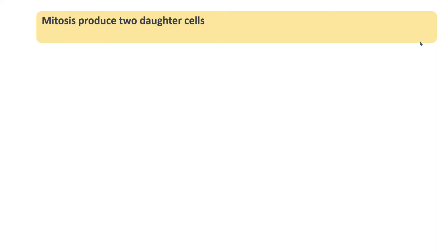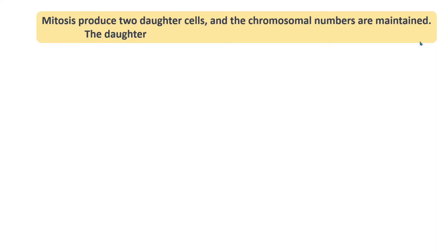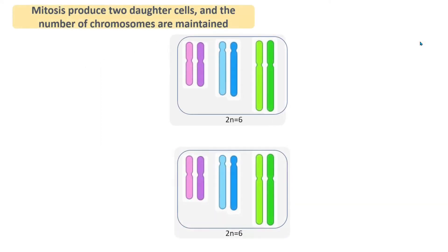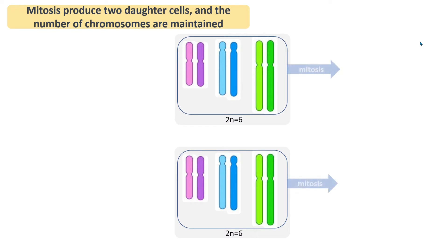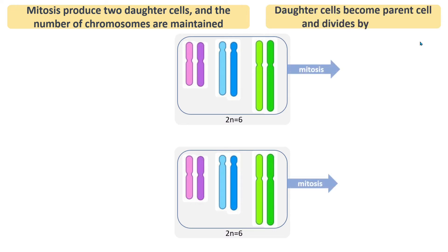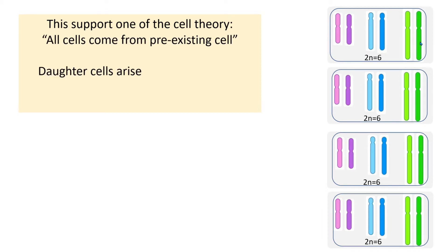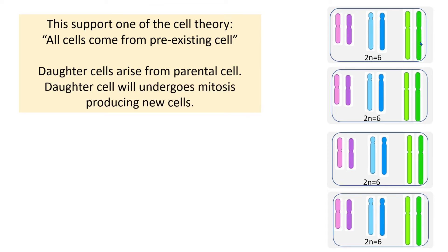Mitosis produces two daughter cells and the chromosomal number is maintained. The daughter cells can become parent cells to produce new cells. This supports one of the cell theory principles: all cells come from pre-existing cells. Daughter cells arise from a parental cell, and those daughter cells will undergo mitosis to produce new cells.